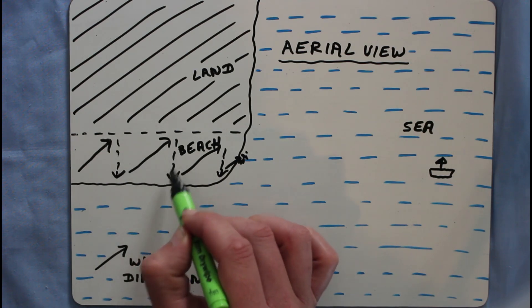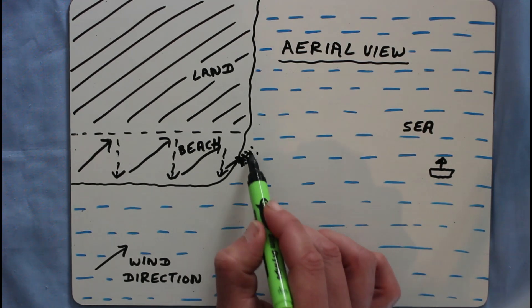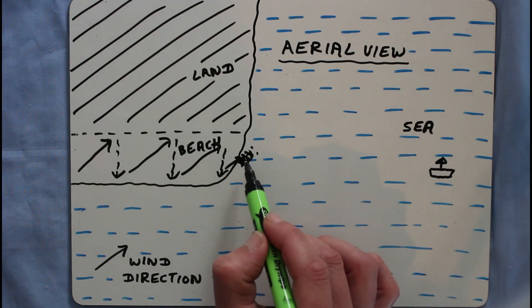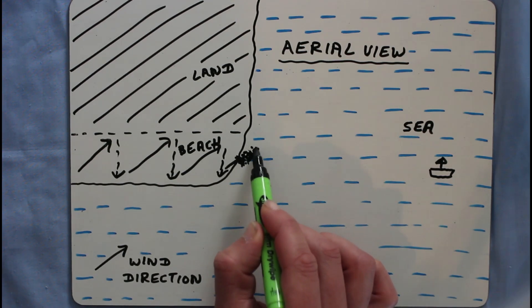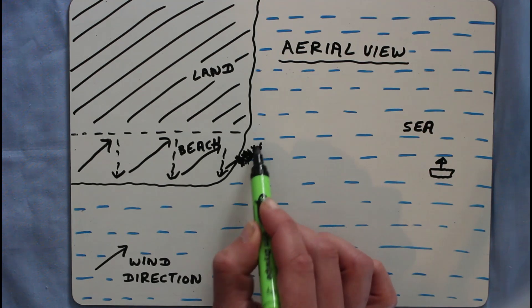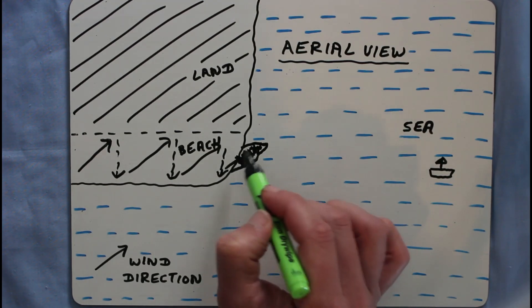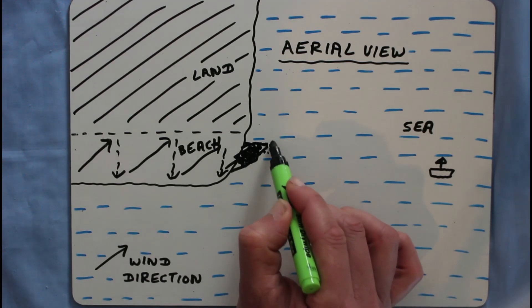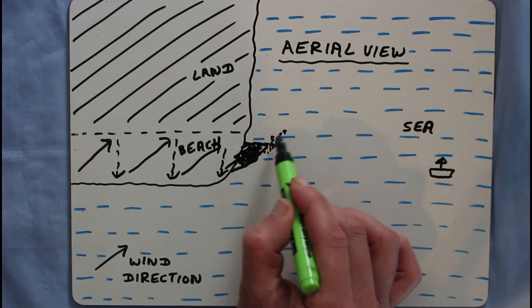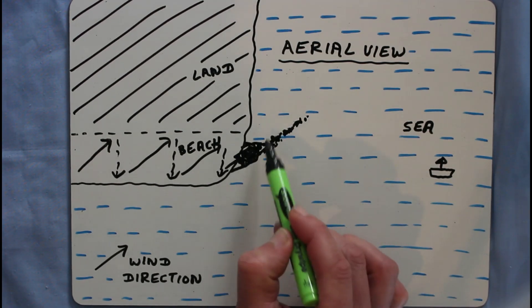The longshore drift carries material off the end of the coast and deposits it at the bottom of the sea. Eventually there is a build-up of this deposited material; it can build up all the way to the surface of the sea, creating new land off the end of the coast. Longshore drift then occurs across this new land, and more material is deposited at the end of the developing spit — a ridge of land growing out into the sea. This can only develop if the sea is calm in that area; if it's not calm, waves will wash the material away.